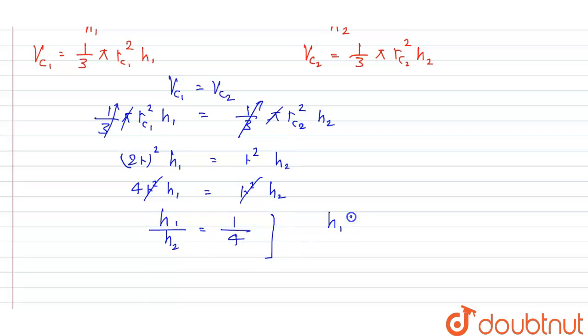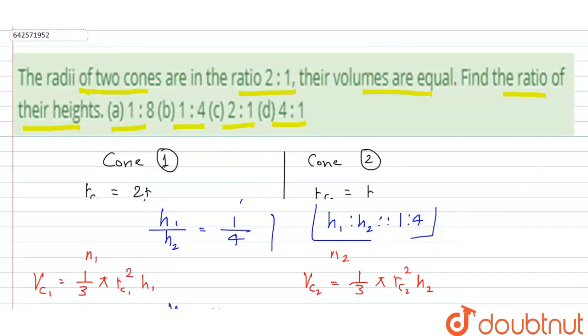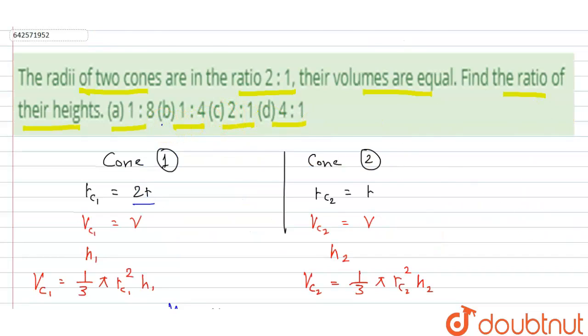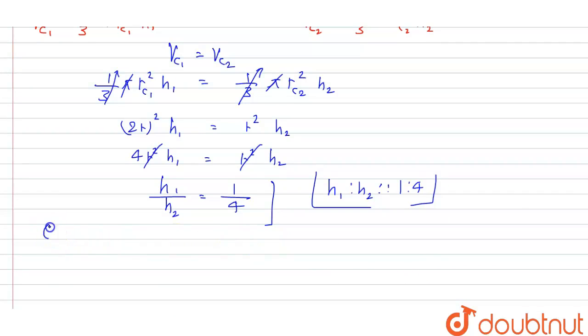The ratio of their heights h1 to h2 is 1:4. This is option B, which is the correct answer.